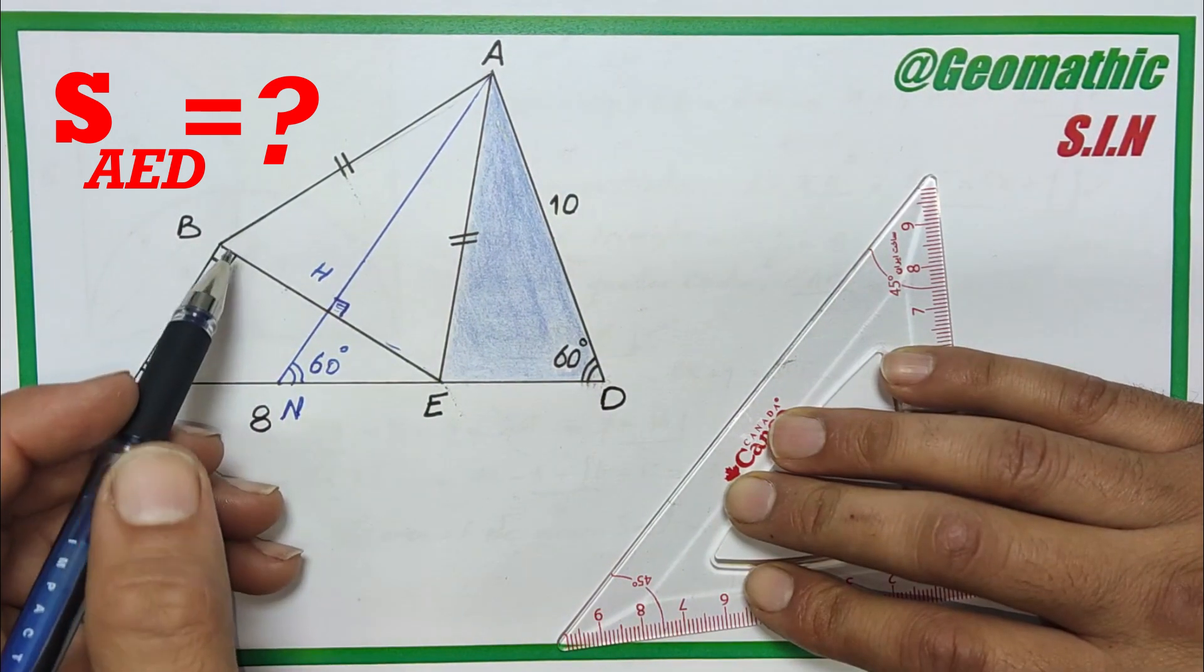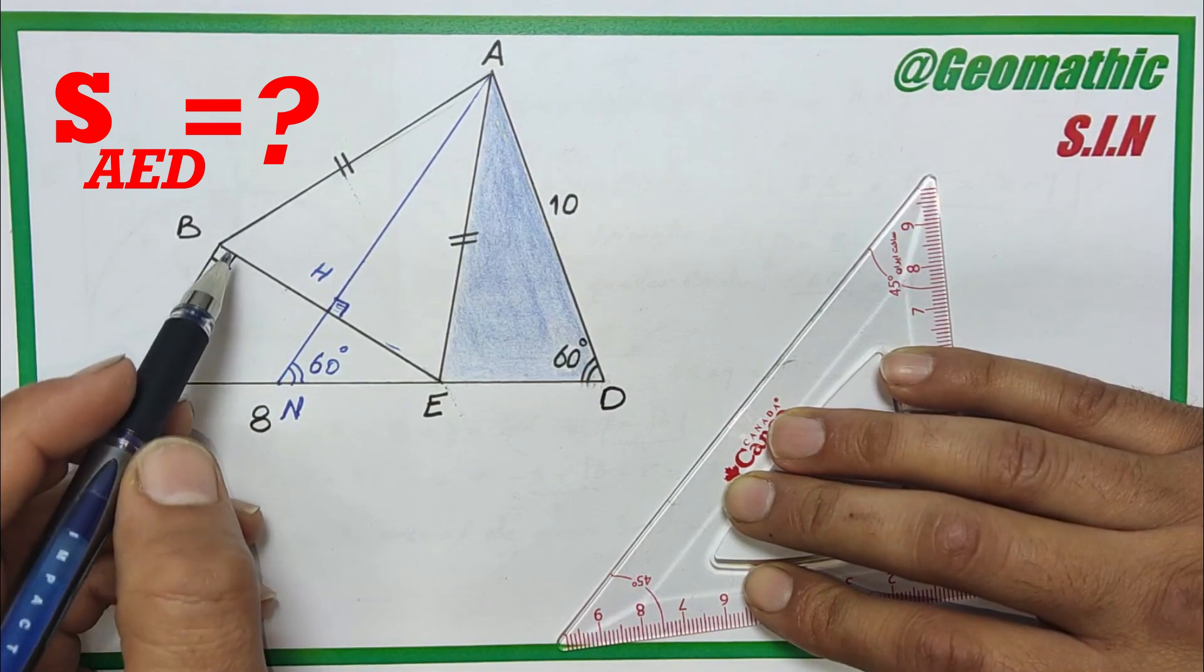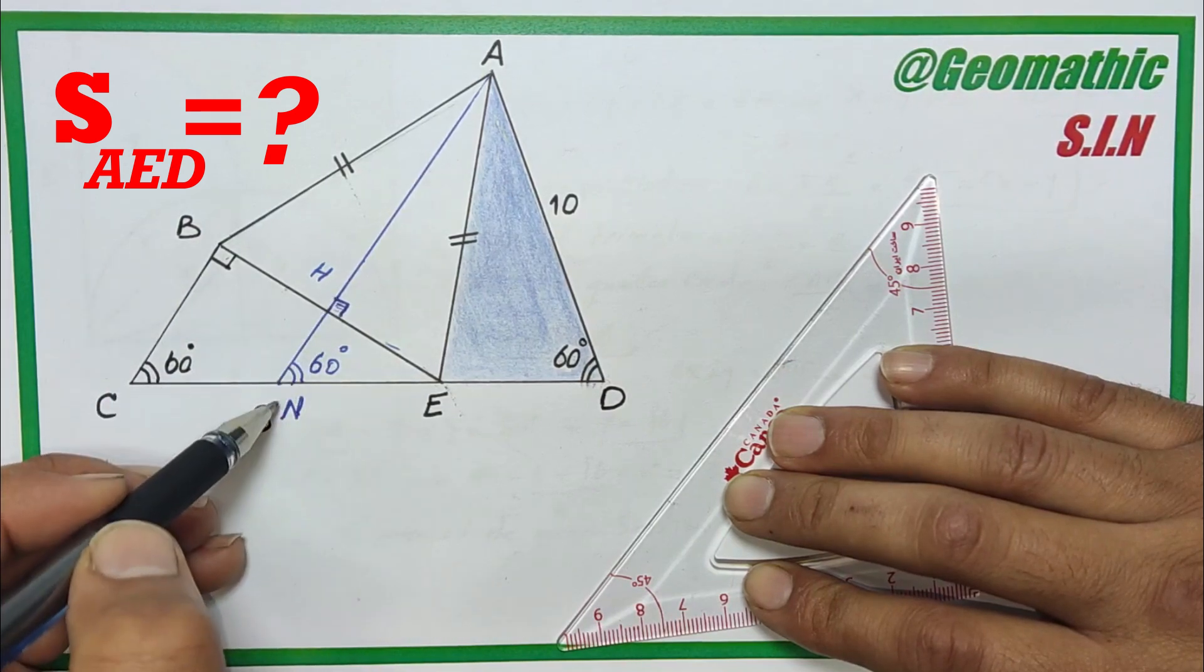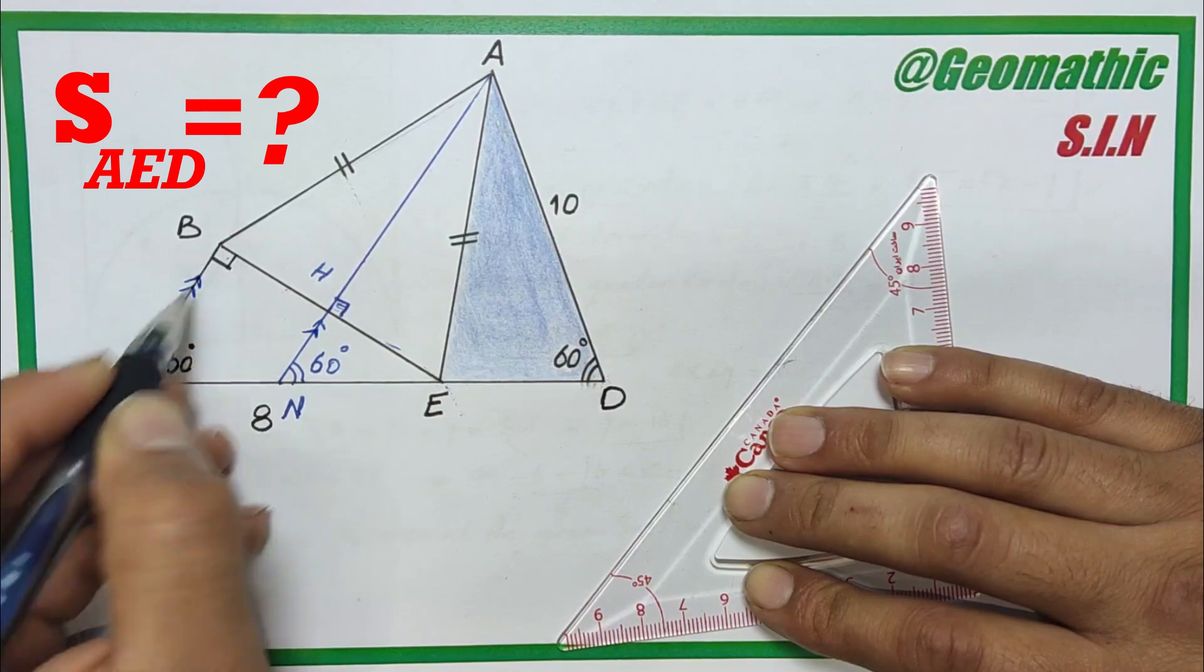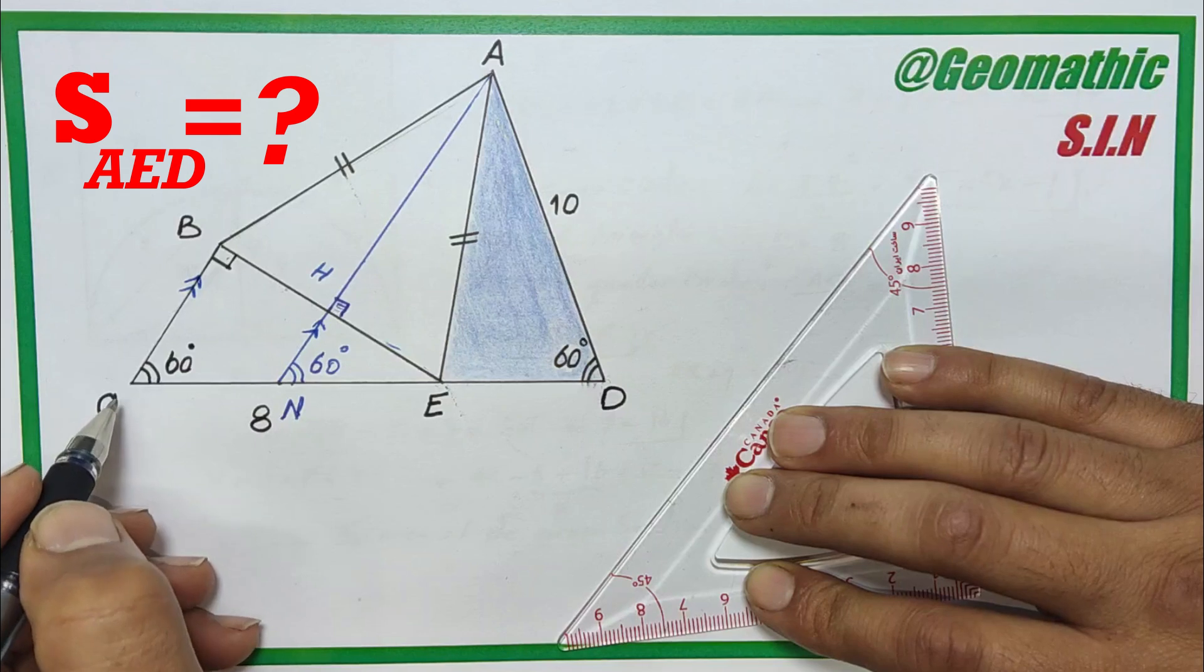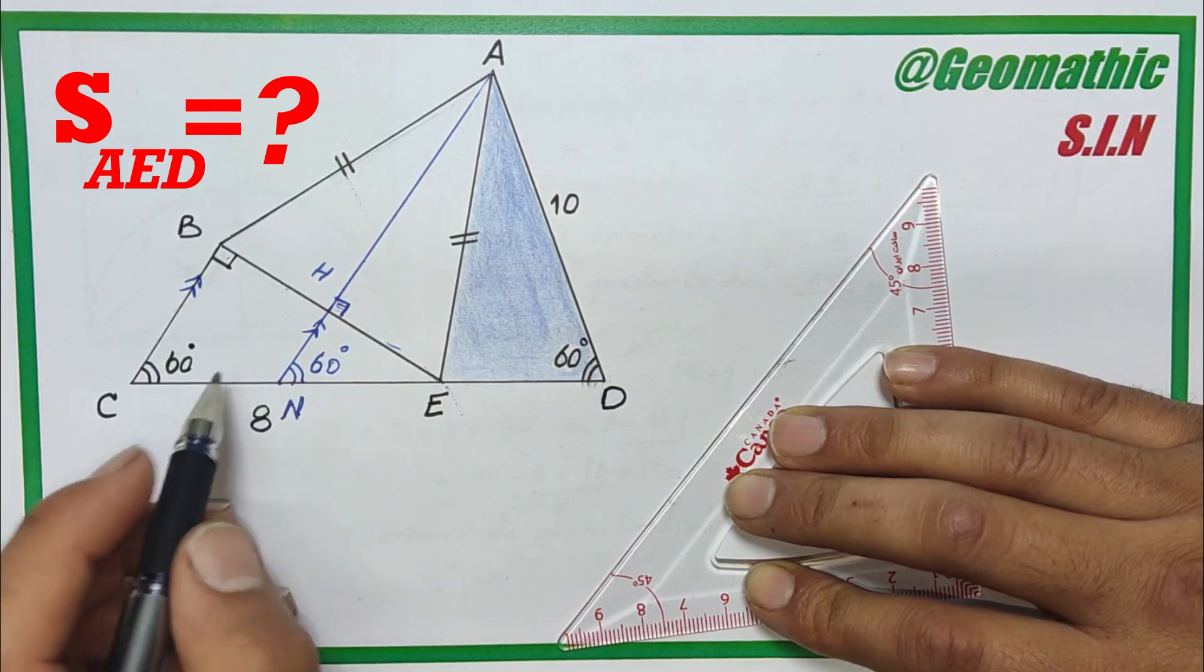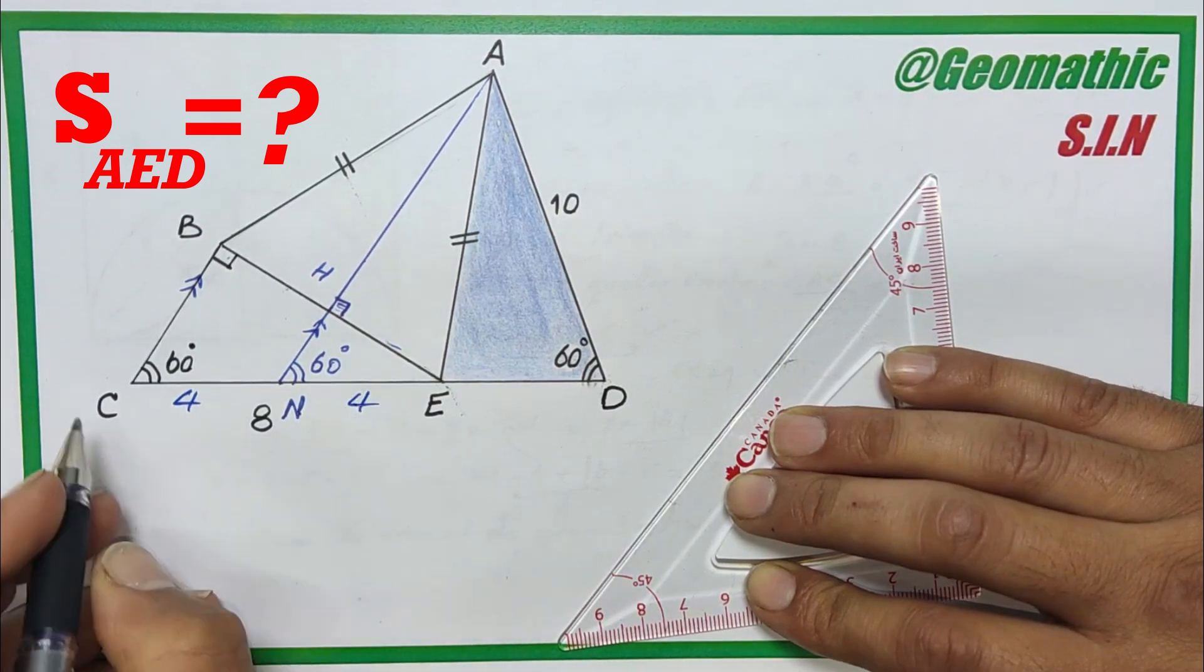Now let's focus on triangle BCE. According to Thales theorem, since H is the midpoint of side BE and these two lines BC and HN are parallel, N should be the midpoint of side CE too. As a result, the length of CE, which is 8, is divided into two equal parts of 4. So we should write 4 here and 4 here.